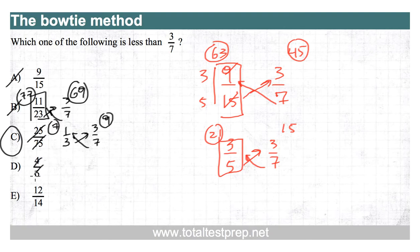So four-sixths, let's reduce that. That's two-thirds. And we're comparing that to three-sevenths. Three times three is nine. Seven times two is fourteen. Fourteen is bigger than nine, so two-thirds is bigger than three-sevenths. So that's out.